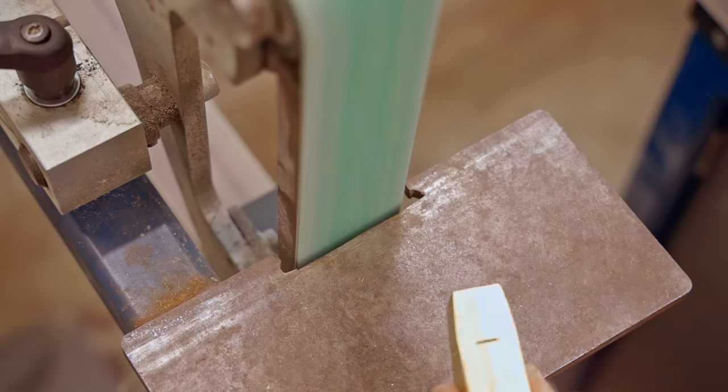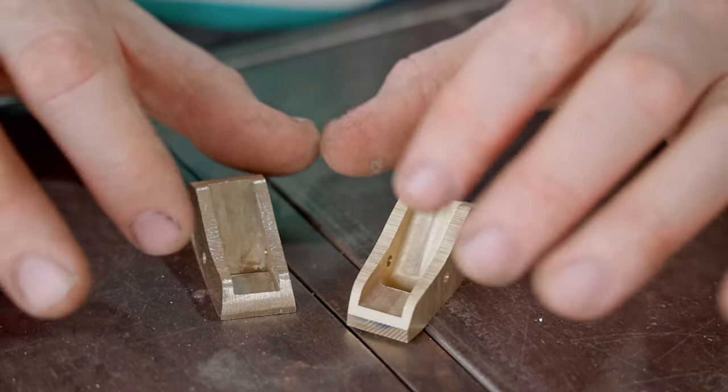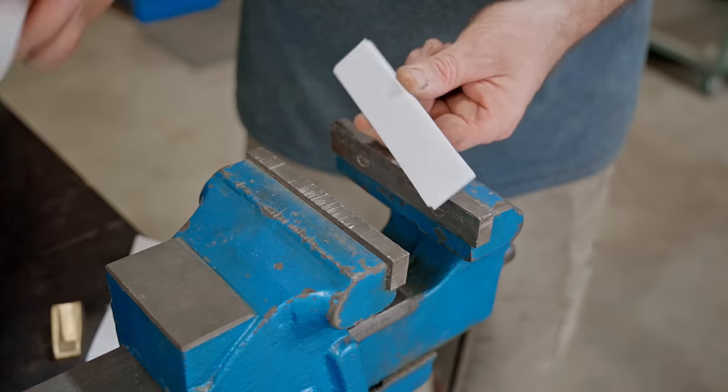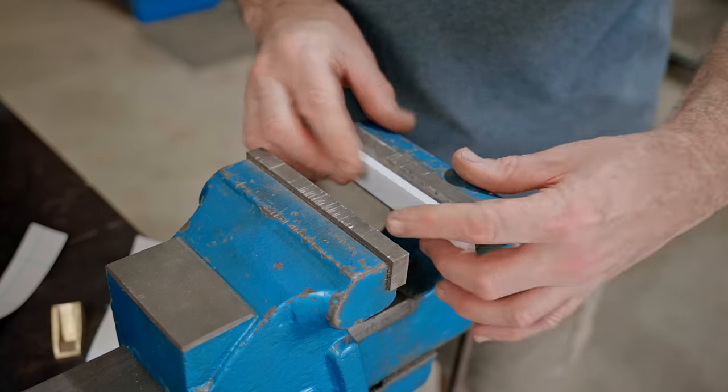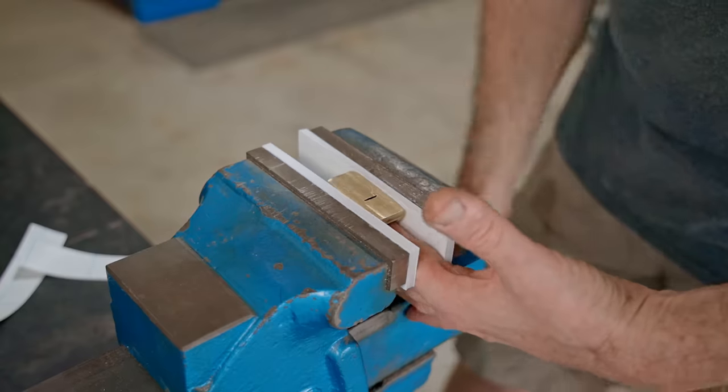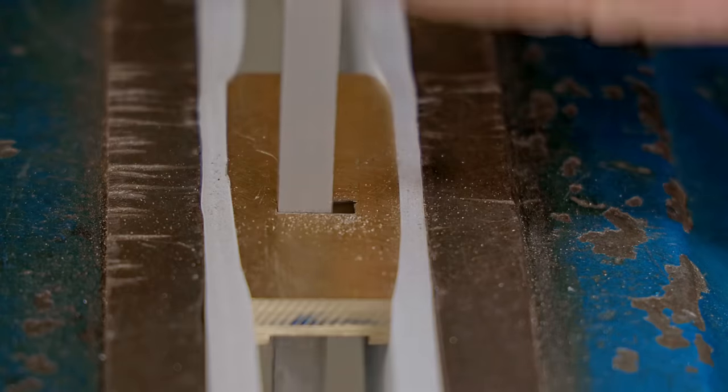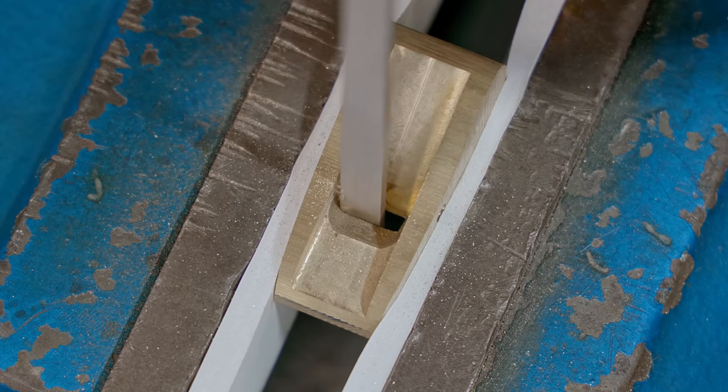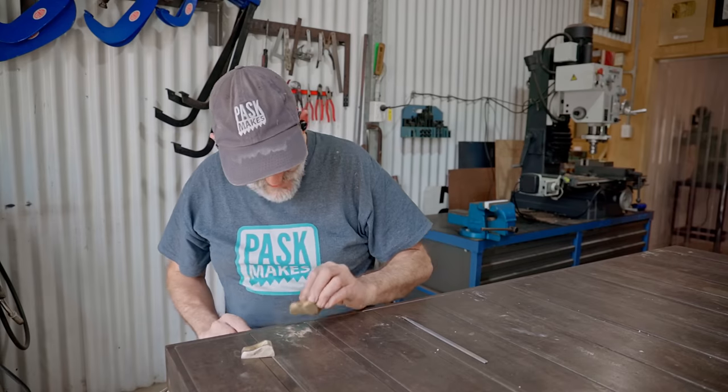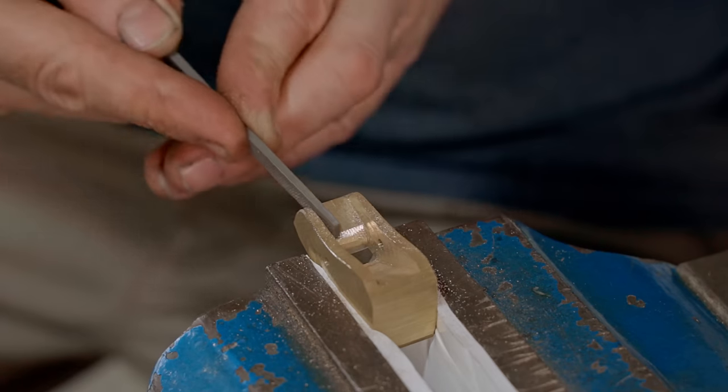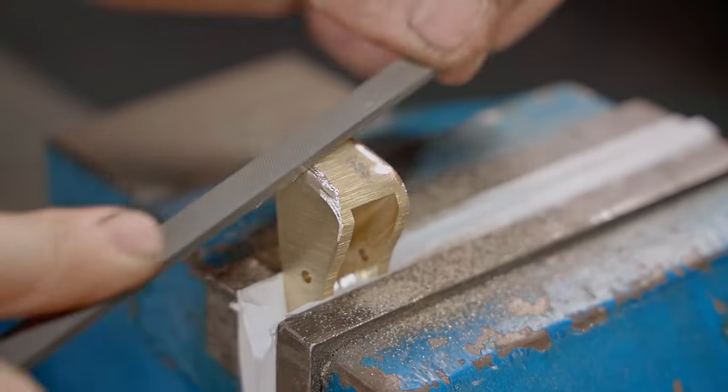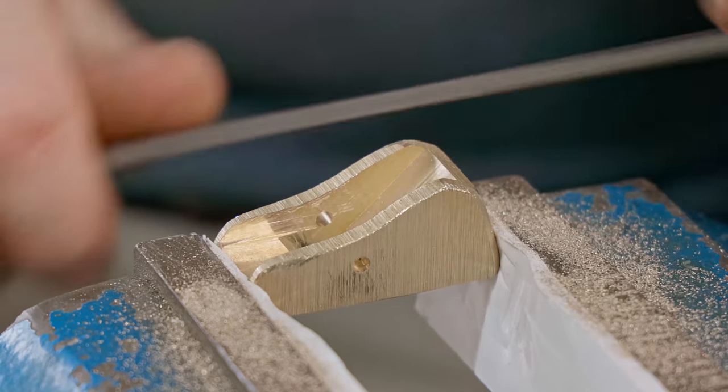They're beginning to take shape and they're looking pretty good. Next I'll start rounding them over and smoothing them out. And also this one here, I need to open up the mouth at the back of the toe. I did both of them with the file and got them up to the same stage.